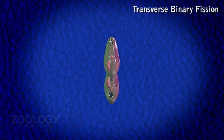Oral grooves now begin to form, one in the anterior half and the second in the posterior half. Original contractile vacuoles remain one in each half of the dividing parent individual.